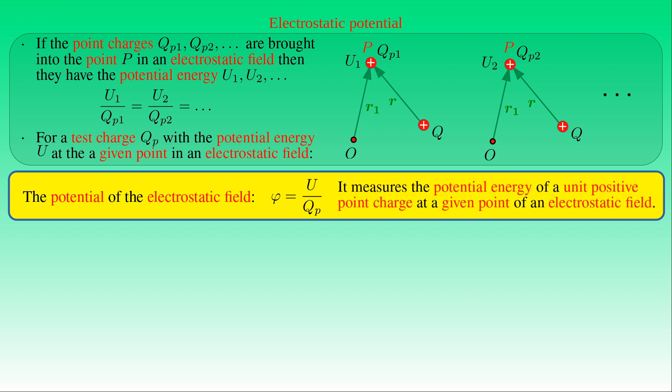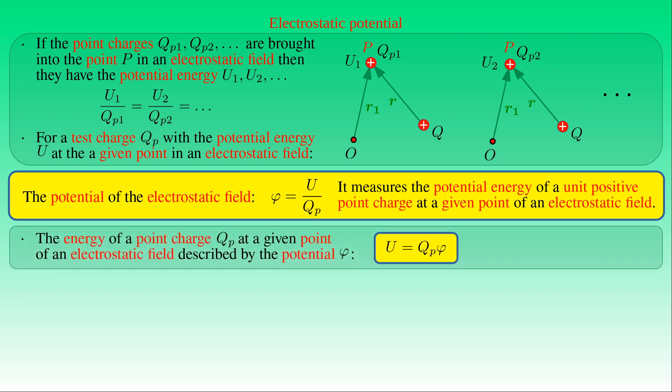Therefore, at a given point of an electrostatic field described by its potential, the test charge QP has energy equal to the product of QP and the electrostatic potential φ at that point.